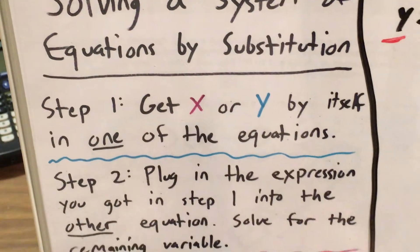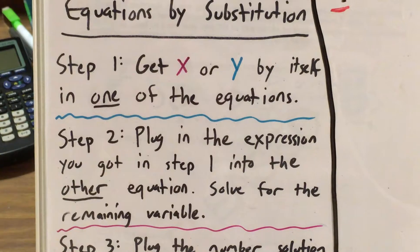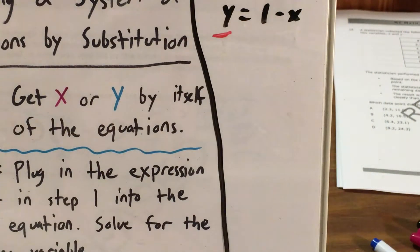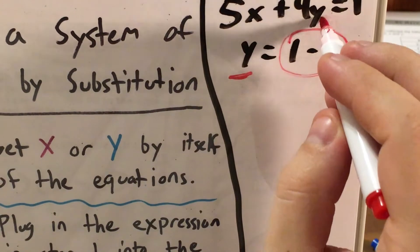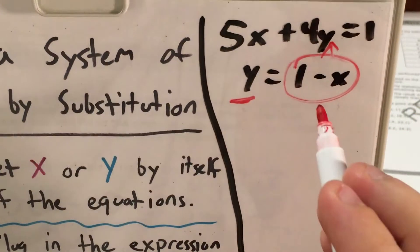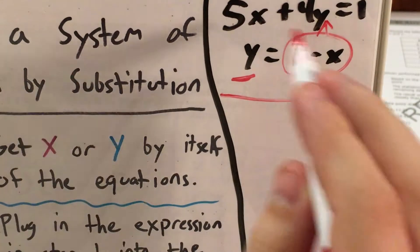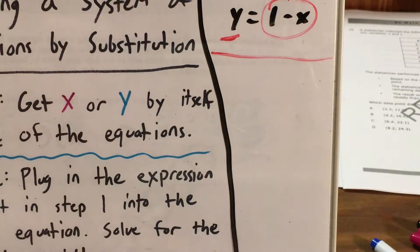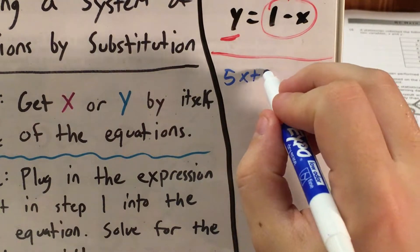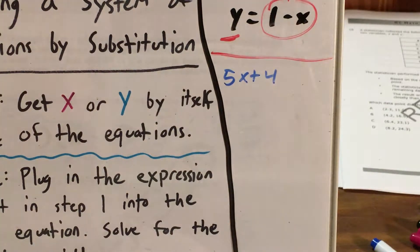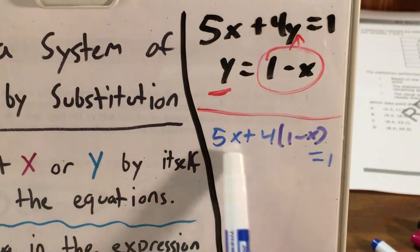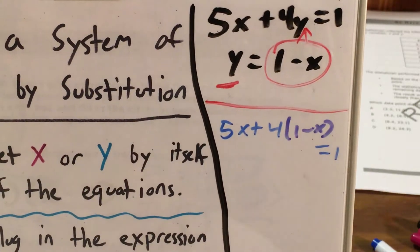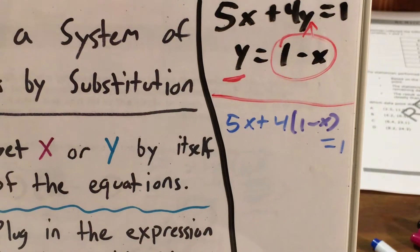So step 2, we're actually going to take that expression that we got in step 1 and plug it back into the other equation. Now what does that mean? Basically, if I see that y equals 1 minus x, then I'm going to take this whole expression that I know equals y and actually plug it in to where I see y in the other equation. So I would actually end up rewriting the top equation there, not as 5x plus 4y, but as 5x plus 4, and then that is all going to be times 1 minus x, which still equals 1.